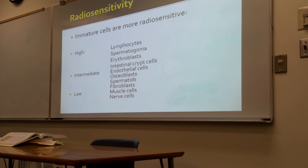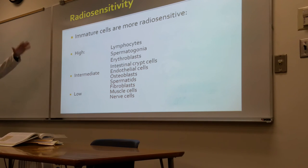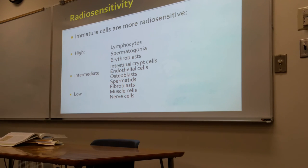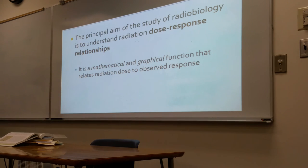The most mature and radio-resistant cells are muscle cells and nerve cells. This chart was developed by two French scientists: Bergonié and Tribondeau.